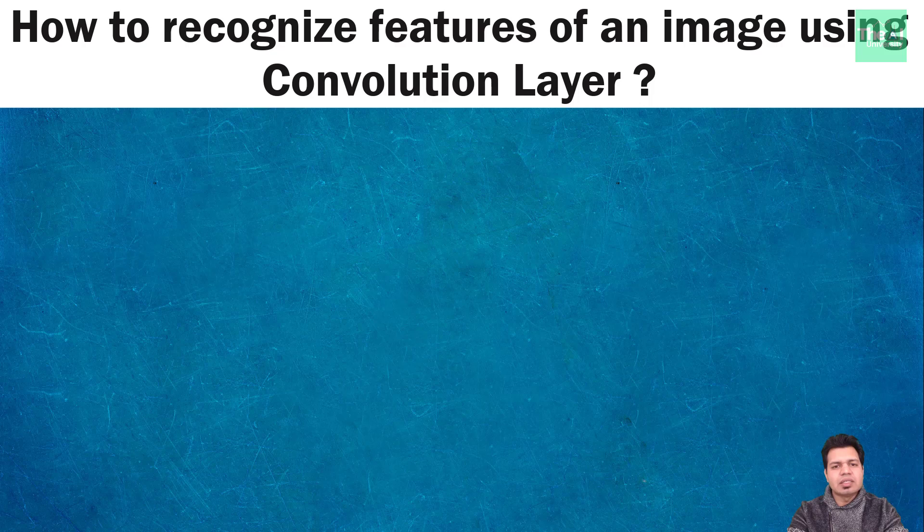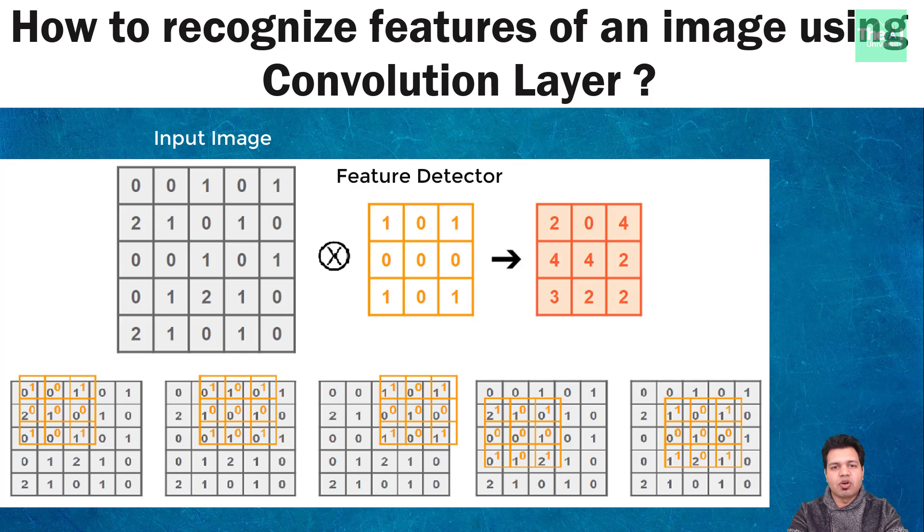Let's move on. Consider we have a training 2D input image on the left hand side and feature detector on the right hand side, which is a 3x3 matrix. It can be 5x5 or 7x7 matrix as well, but the most commonly used is 3x3 matrix.